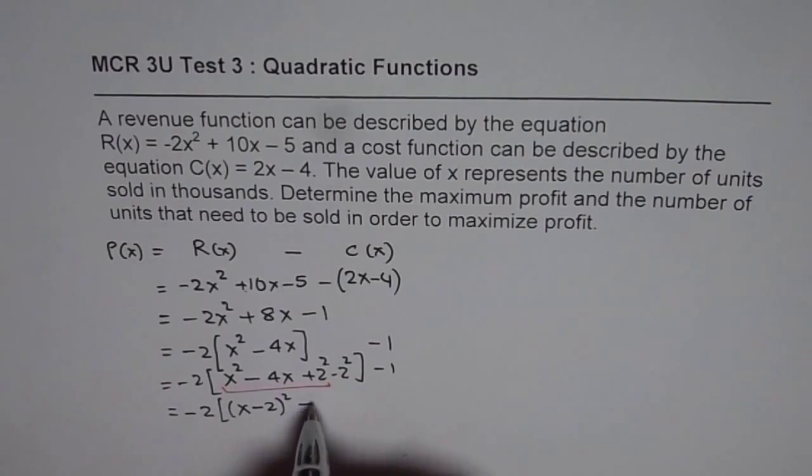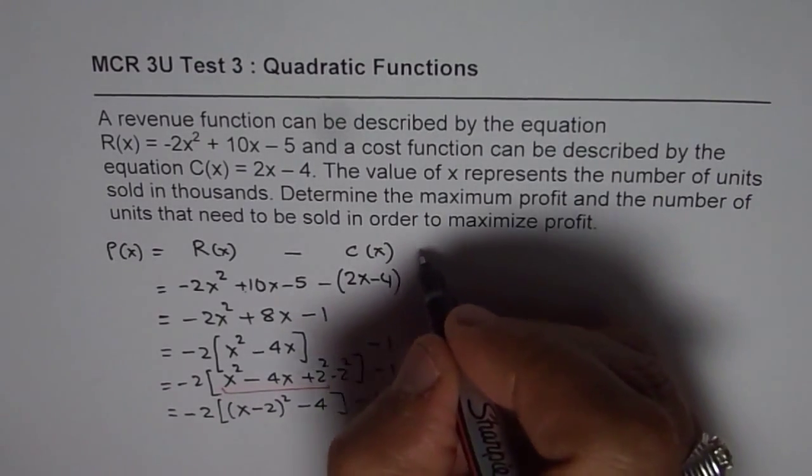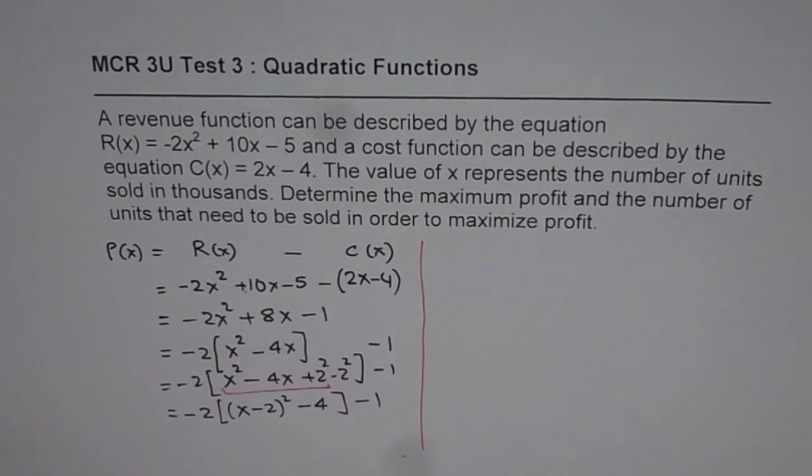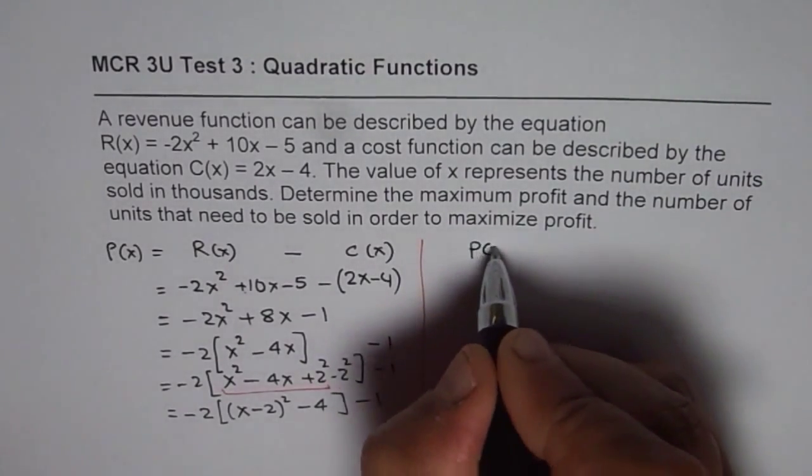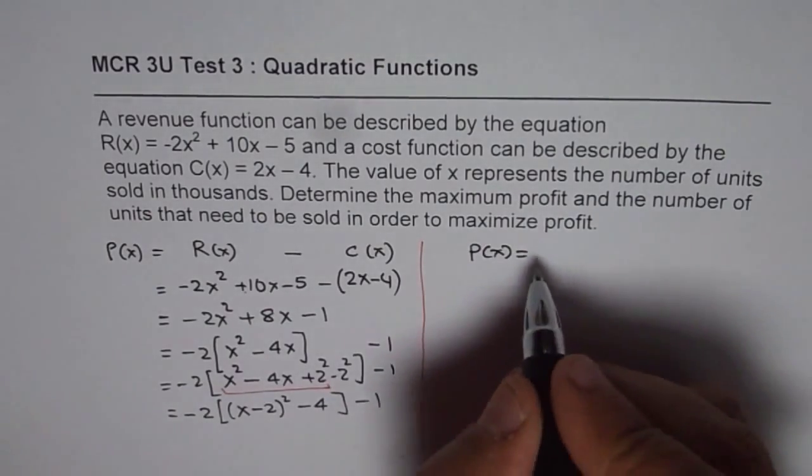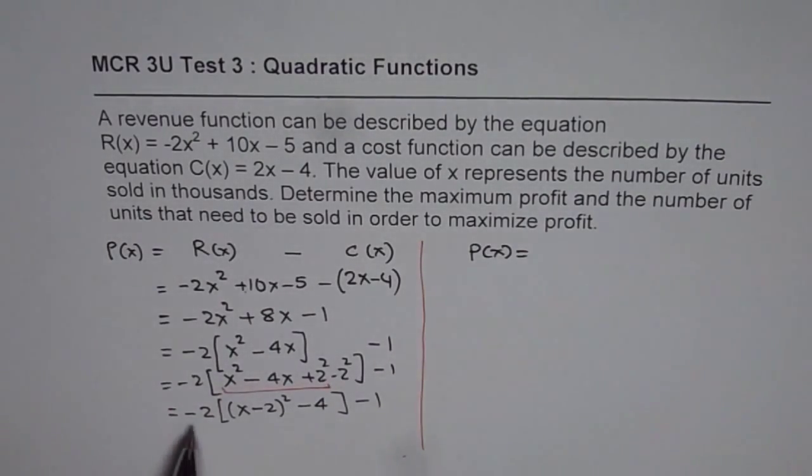Minus 2 squared is minus 4, square brackets. Now we'll take it to the right side and then solve further. So we have profit function P(x) as equals 2. Now let's open this bracket. So minus 2 times x minus 2 whole square.